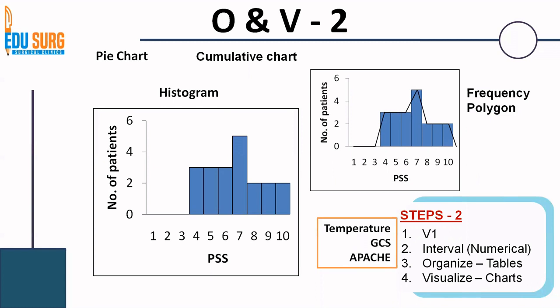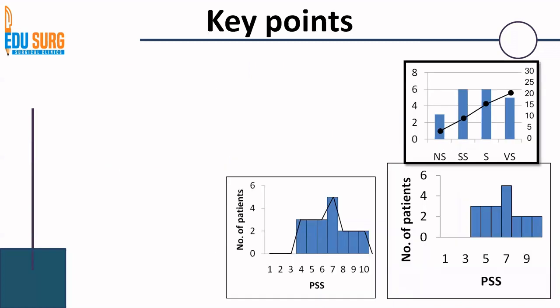Other examples of interval or numerical data are temperature, Glasgow Coma Scale or Apache score or similar other medical scores that we take for assessing our patients. These are all interval data and you can use any of these techniques for visualizing the interval data.